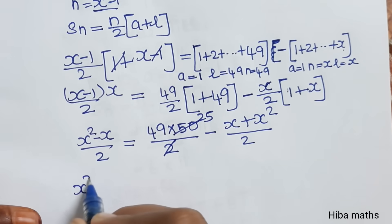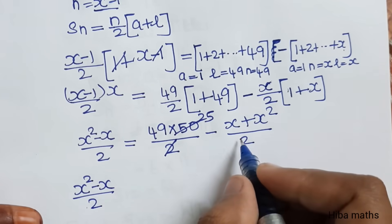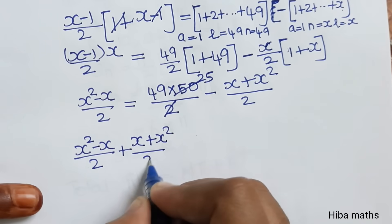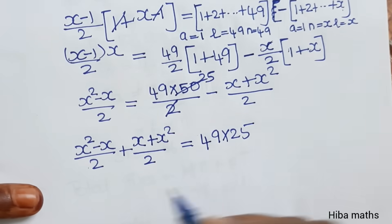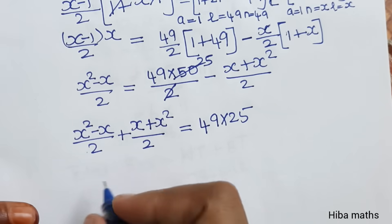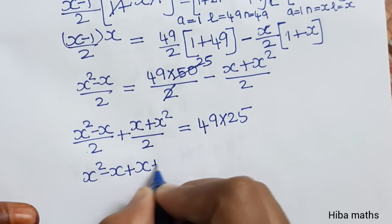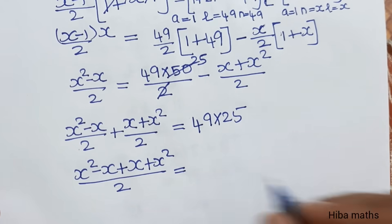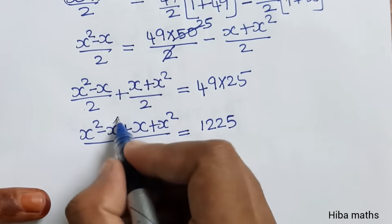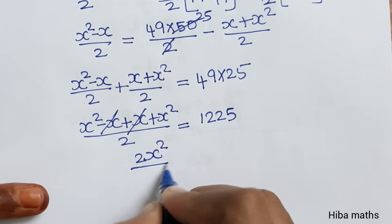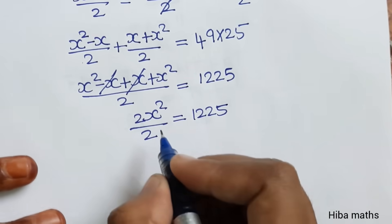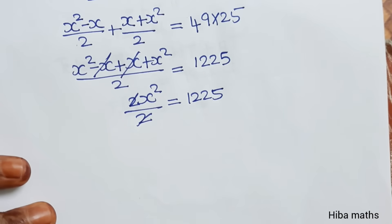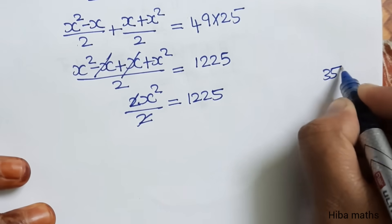Now substituting and simplifying: x squared minus x by 2 on the minus side, plus x plus x squared divided by 2, is equal to 49 into 25. With one denominator, x squared minus x plus x squared divided by 2 equals 49 into 25, which is 1225. Then plus x minus x equals 2x, so 2x squared divided by 2 gives x squared equals 1225.